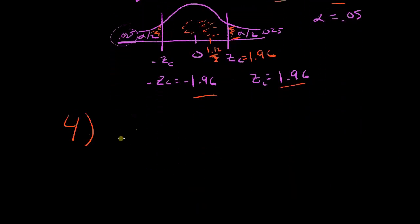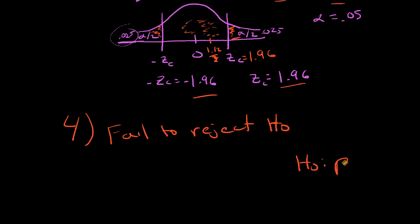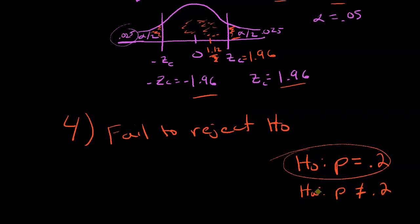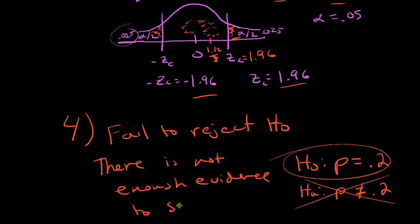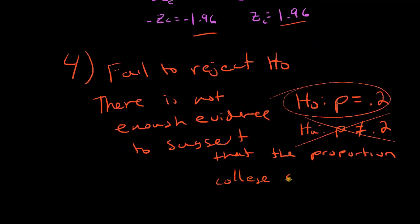Finally, step four: state our conclusion. We determined that we fail to reject the null hypothesis. Our null hypothesis was P equals 0.2 and the alternative was P does not equal 0.2. Failing to reject the null means there is not enough evidence to suggest that the proportion of college smokers is different than 0.2.